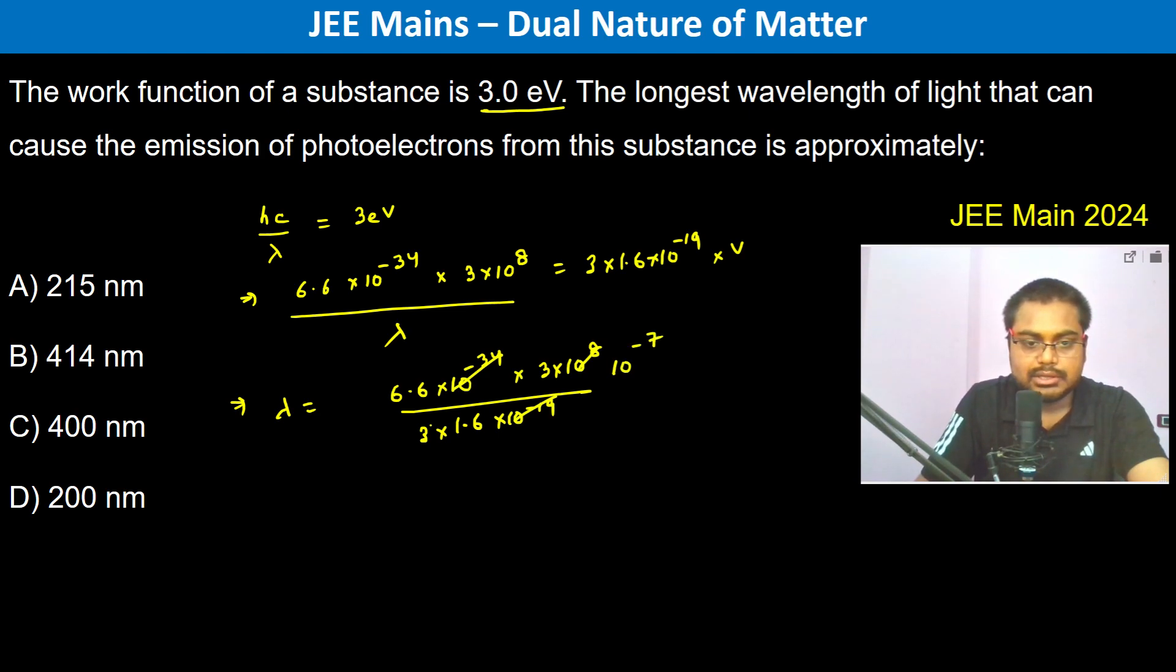minus 7. 3 and 3 cancel, 1.6, so this is going to be more than 4. And we have 10 to the power minus 7, which is equal to 414 nanometers.